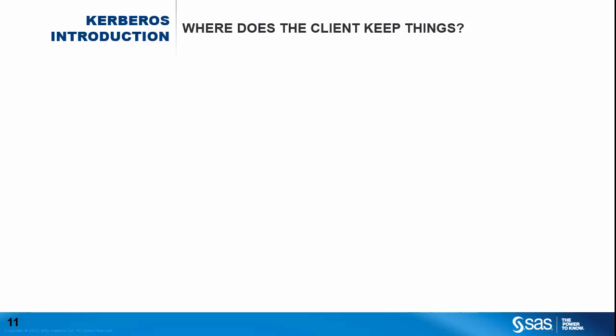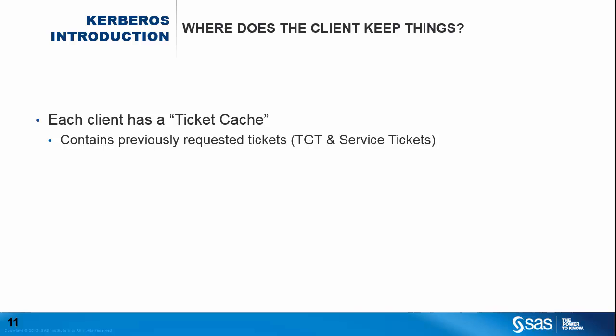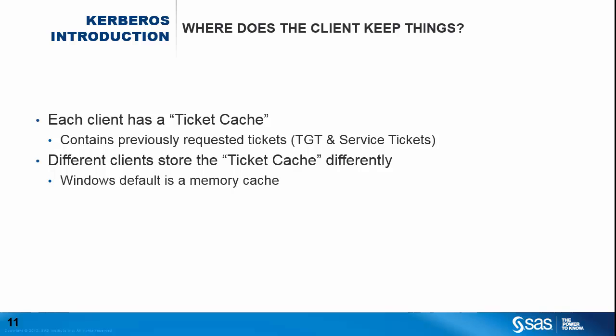We've talked about how the Kerberos protocol works at a high level and seen that the client gets a number of different tickets. Now we'll look at where the client keeps those. Each client — and in fact each user on each client — keeps their previously requested tickets in a ticket cache. The ticket cache contains both ticket granting tickets and service tickets that the end user on the client has requested. These are kept for the lifetime of the ticket, or the lifetime of the end user session.